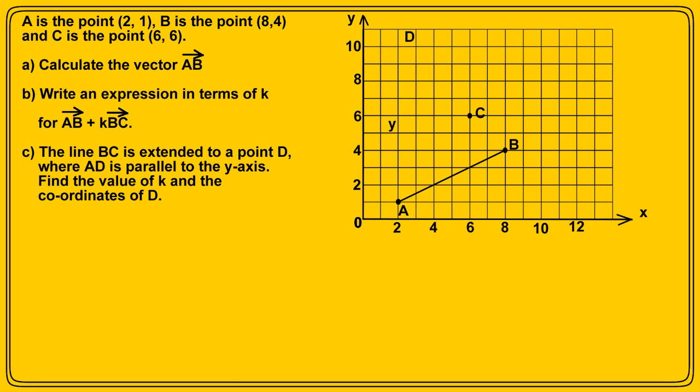Right, part A. The vector AB we're asked to find represents a journey from point A to point B, and this is obviously six units in the x-direction and three units in the y-direction. So the vector AB is (6,3), and that part wasn't too difficult.